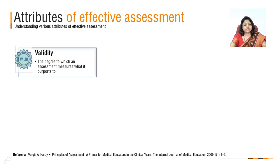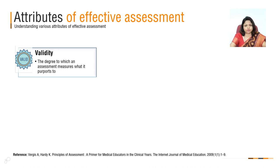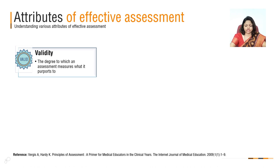Coming to attributes of effective assessment: when we talk about blueprinting in assessment, we must have some knowledge about attributes of effective assessment. We have all heard of terminologies like validity. Validity is the degree to which an assessment measures what it purports to — which means, suppose I want to test the psychomotor skills of my students, I cannot assess that with a theory question paper; for that I need OSCE or OSPE. Theory question paper assesses knowledge. So this example explains the meaning of validity — it measures what it intends to measure.